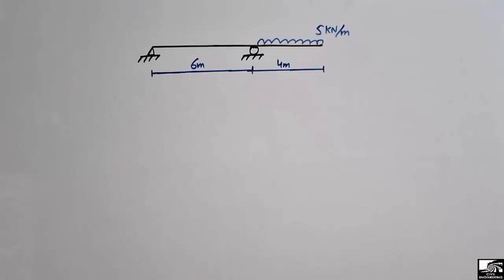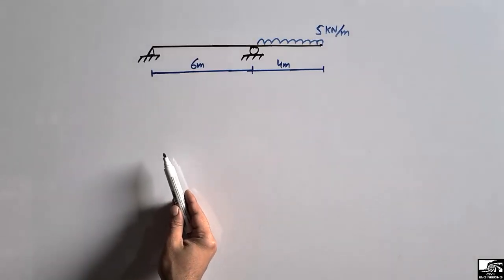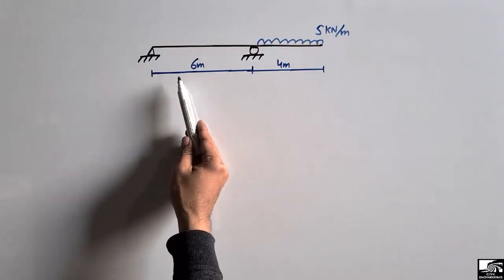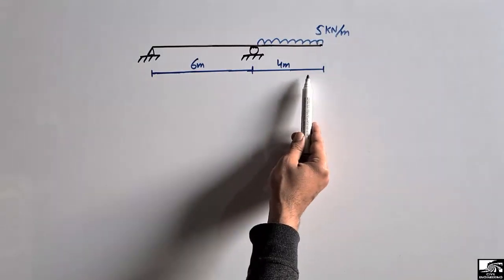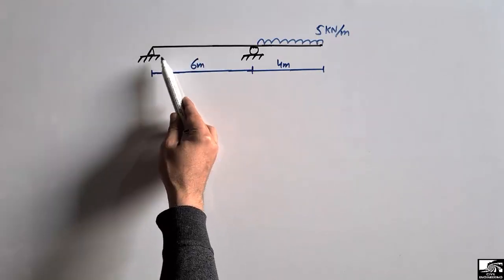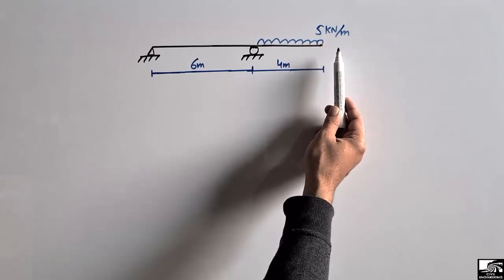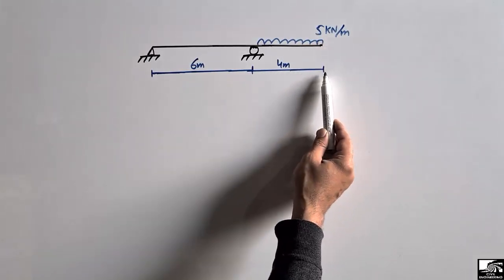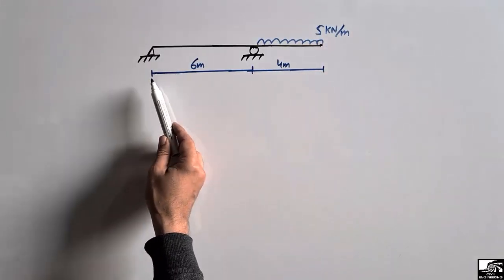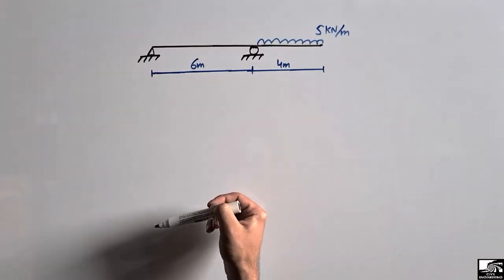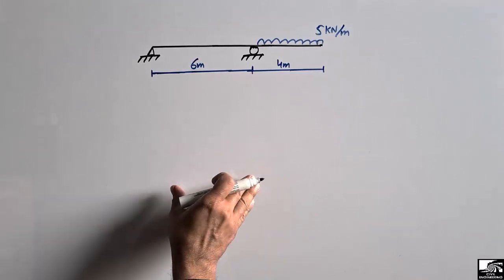Hello guys, welcome back to EC1 Engineering YouTube channel. Please subscribe to our channel for daily EC1 Engineering videos. Today our lecture is about support reactions. We are going to find the support reactions for this beam. The beam has a total length of 10 meters, where 6 meters has no load and there is a uniformly distributed load of 5 kN per meter over a length of 4 meters. We have to find the support reactions and verify them at the end.